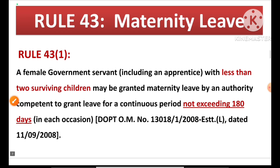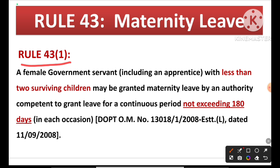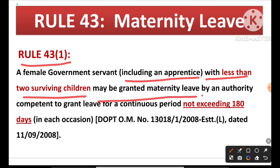Now let's discuss maternity leave in detail. First, remember: Rule 43, CCS Leave Rules 1972 is related to maternity leave. Rule 43(1) states: a female government servant, including an apprentice — those in training are also included — with less than 2 surviving children may be granted maternity leave for a continuous period not exceeding 180 days.